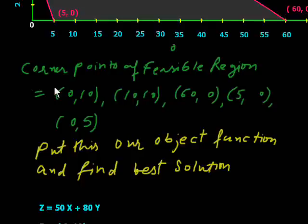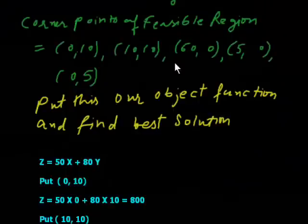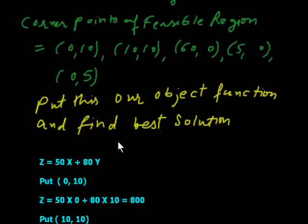So I am writing the corner points: 0, 10; 10, 10; 60, 0; 5, 0; and 0, 5. Put these corner points in the objective function and find the best solution.